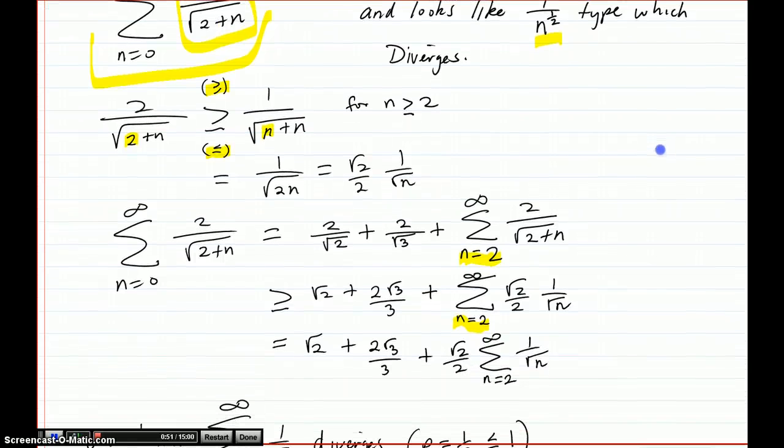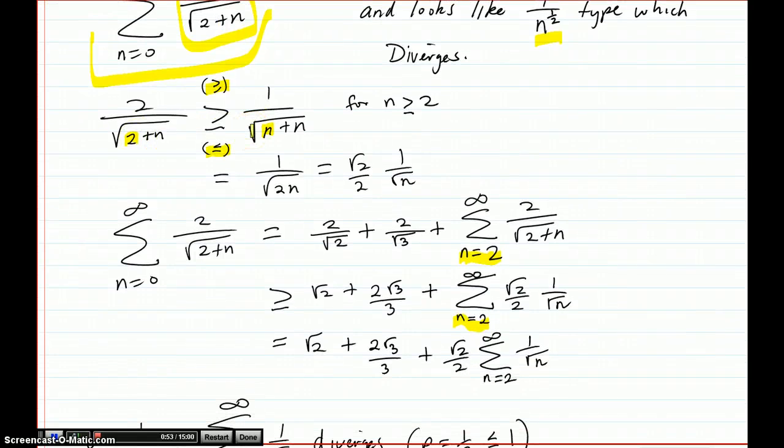So we start off with our inequality. We start with our term and we want to maneuver it toward the 1 over the square root of n. So I can't take the square root of 2 plus n. I'm kind of stuck there. But if I up the 2 up to an n itself, I can then add the n's together and good things will happen. So I write this as my habit.